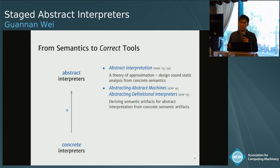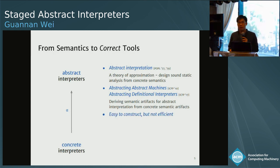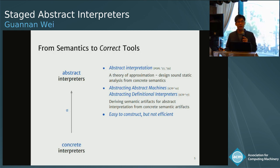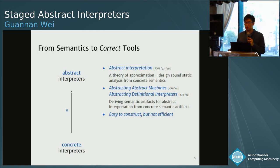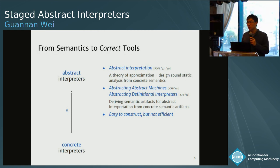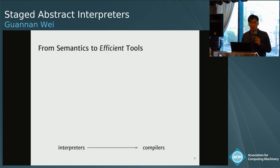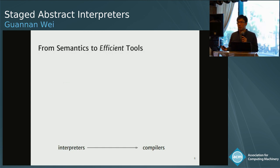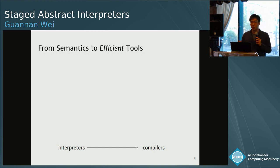Those concrete counterparts include small-step abstract machines or big-step definitional interpreters. Those approaches are all good in that they provide a relatively easy way to create useful, practical, and sound tools from concrete interpreters. But in general, they are not efficient by design. And if we really care about efficiency and look at concrete interpreters, people usually build compilers, and those compilers generate code that actually does the job.